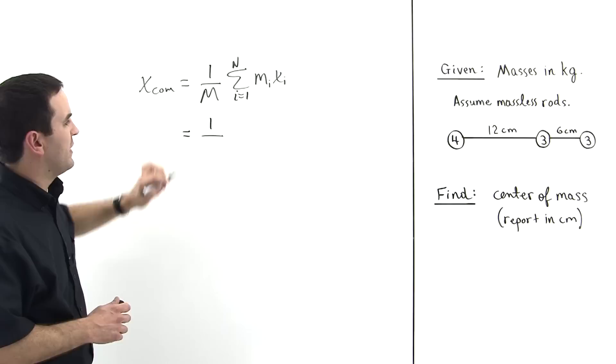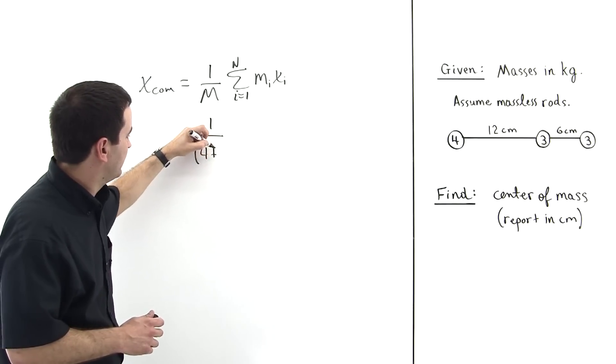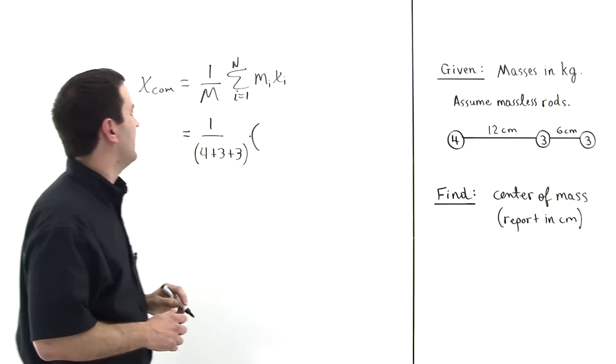So capital M is just four plus three plus three, so we'll write this down explicitly. Four plus three plus three, like this, times a sum.